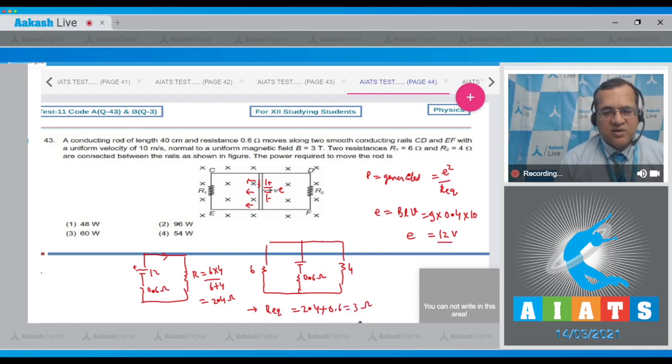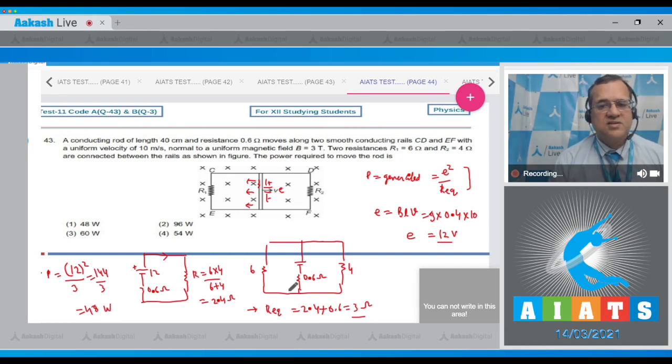Now we know the voltage and resistance, so using the power formula: P = V²/R = 12²/3 = 144/3 = 48 watts. So 48 watts is the answer, making the first option correct.